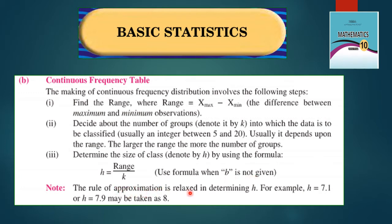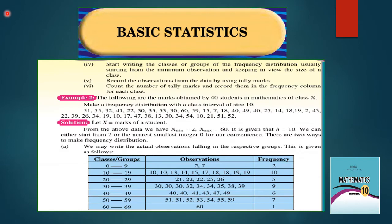Note: the rule of approximation — for class interval h, for example 7.1 or 7.9 is given, we round off to 8. Fourth, start writing the classes or groups of frequency distribution, usually starting from the minimum observation, keeping in view the size of class. Record observations from the data using tally marks, count them, and record in the frequency column for each class.